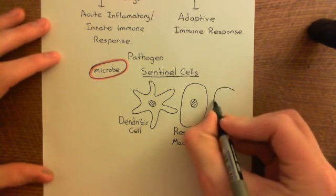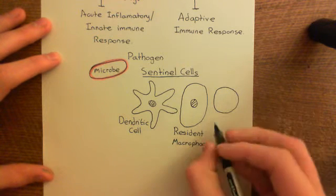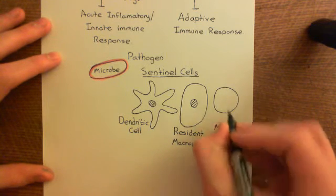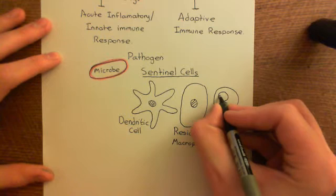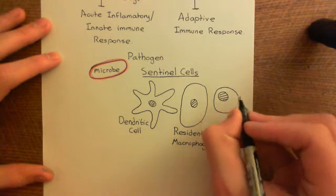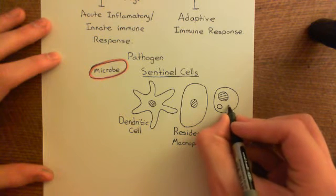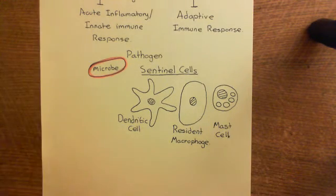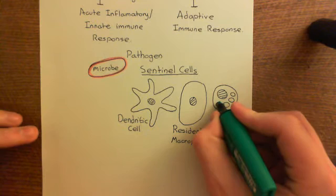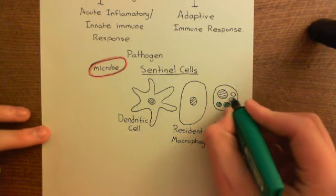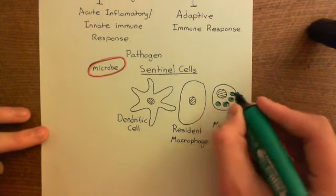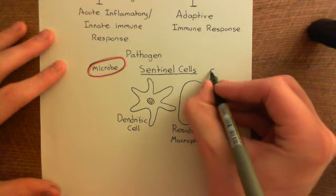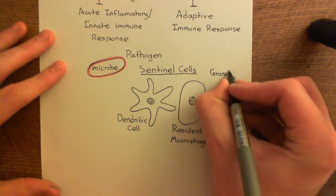The final sentinel cell type is the mast cell. Mast cells are dispersed around all the tissues of your body. Here is the nucleus of a mast cell, and they have within their cytoplasm these granules — vesicles full of histamine. So these little green dots represent loads of histamine molecules within the mast cell. These are known as the mast cell granules, or histamine granules.